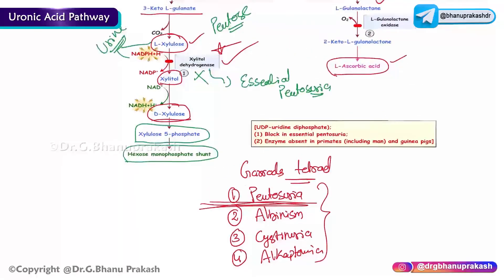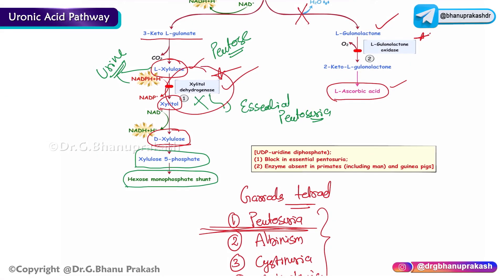In essential pentosuria, L-xylulose is excreted in the urine. The Benedict's test will be positive (detecting reducing sugars in urine), and Bial's test is also positive. These are two important diagnostic points for essential pentosuria.